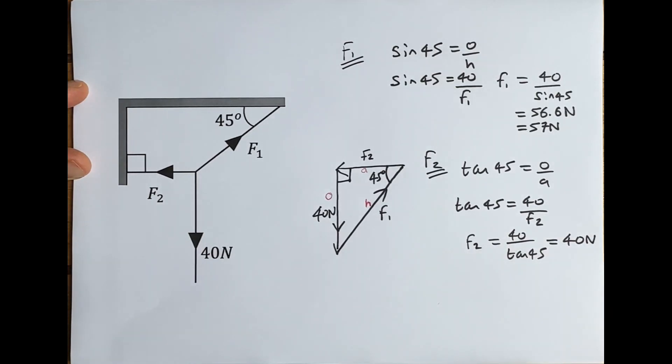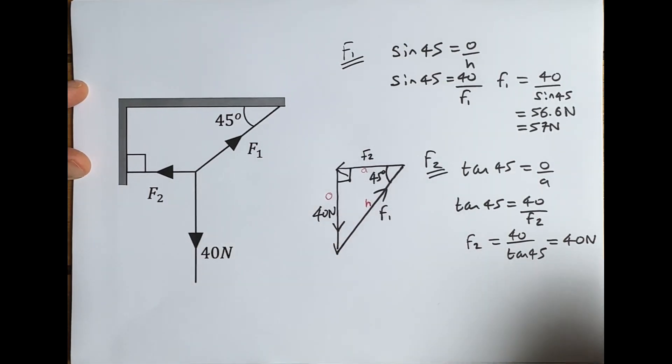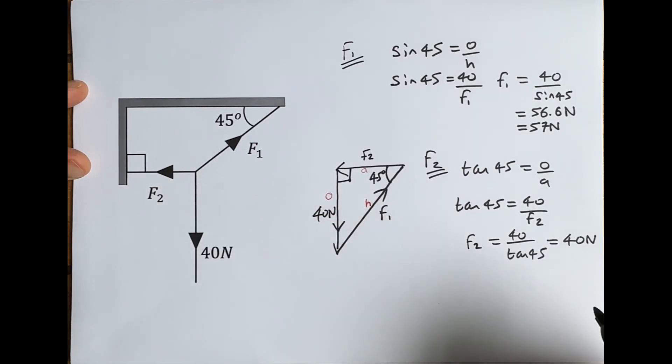So that's the solution. Now there is another way of doing it, and the other way is to resolve these vectors—this vector here—into horizontal and vertical components. I'll show that on another video.